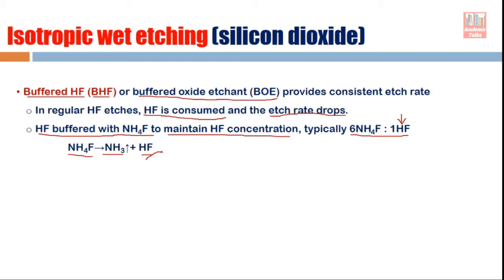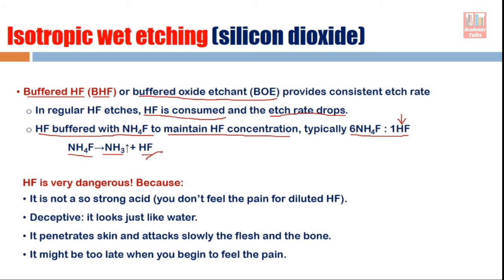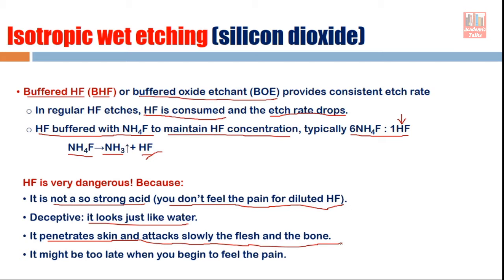When using hydrofluoric acid, there are many dangers. Diluted HF is not a strongly painful acid on the skin — you may not feel anything immediately. It looks like water on the skin. But it starts penetrating into your skin and slowly attacks flesh and bone. It can penetrate into your bones. You must be very careful because it may be too late when you begin to feel the pain.